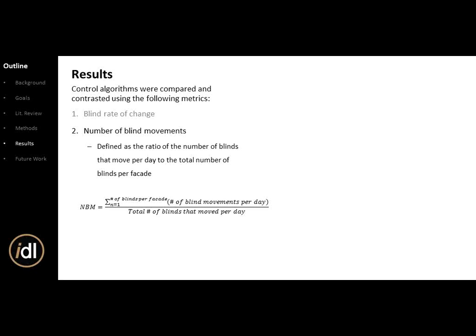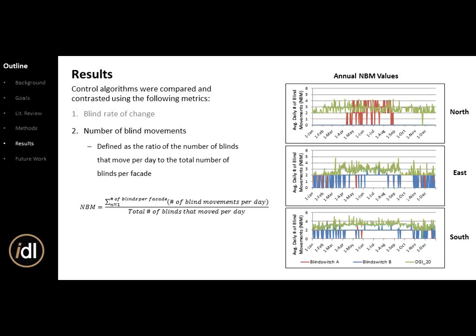Number of blind movements is the ratio of number of times blinds move per day compared to the total number of blinds per facade — opening and closing each count as one movement. DGI again has the highest number of blind movements. For Blind Switch A and B, on the east and south facade, you typically see a constant value of about two movements — blinds closing in the morning and retracting in the afternoon. In summer it's typically just closed in the morning and open in the afternoon.